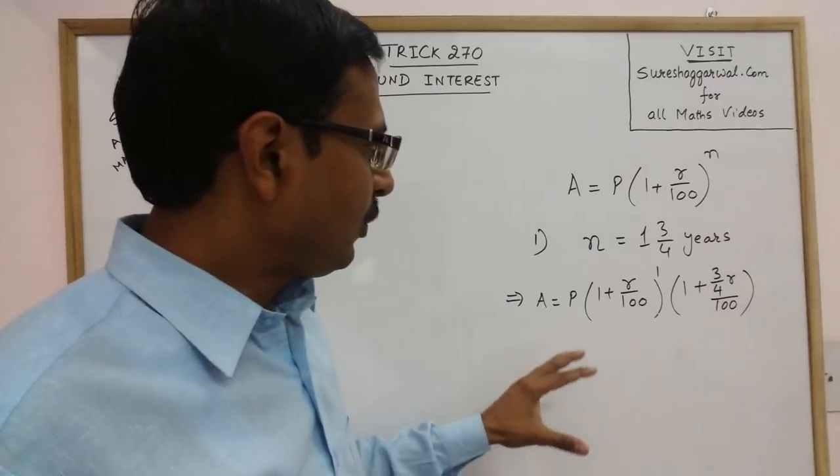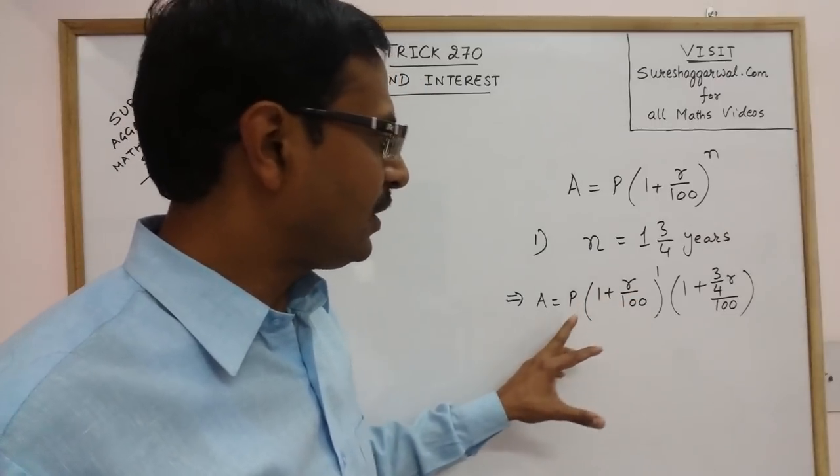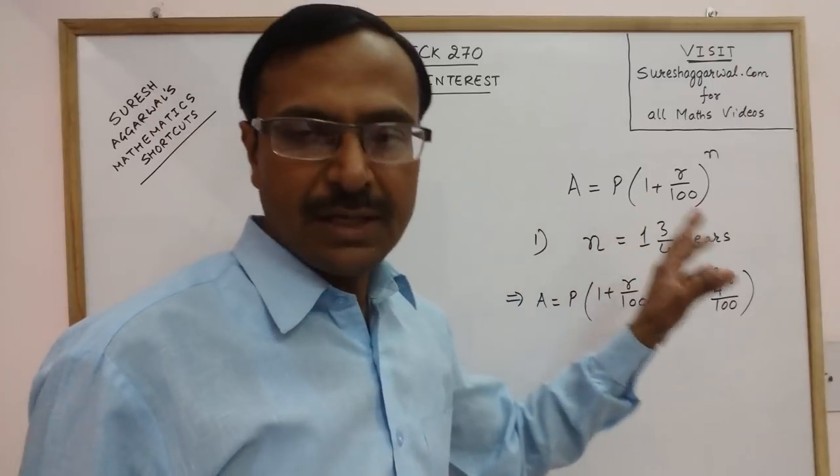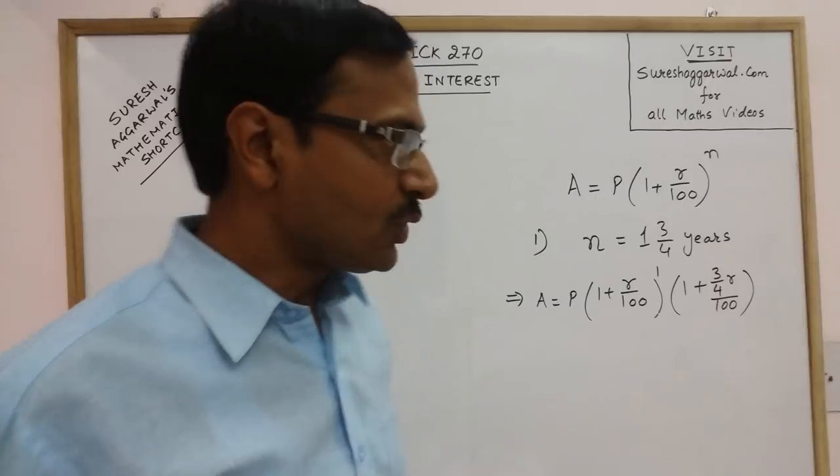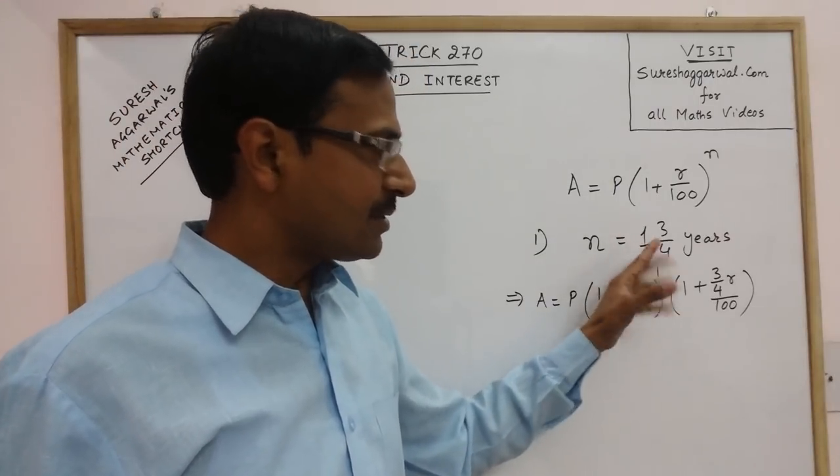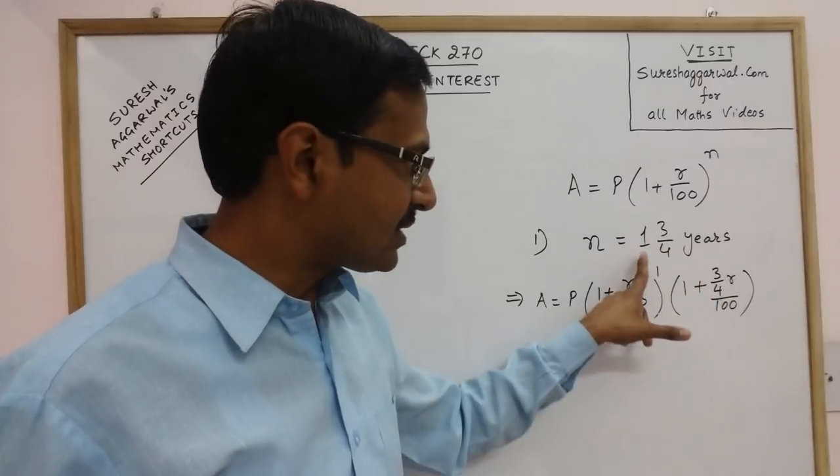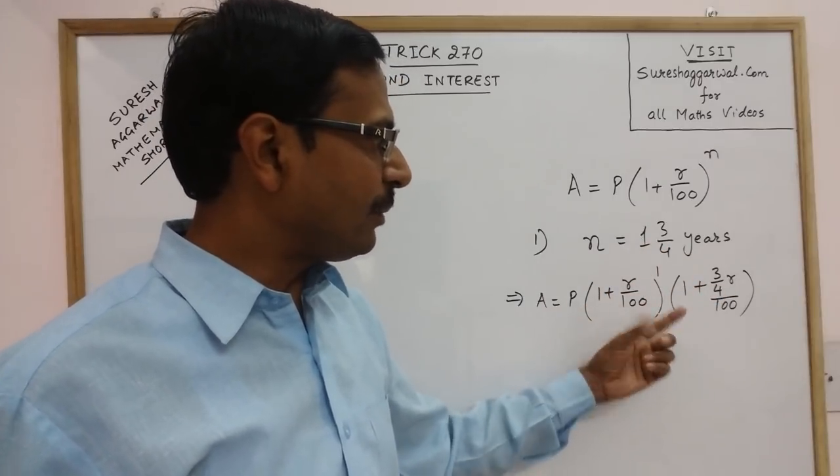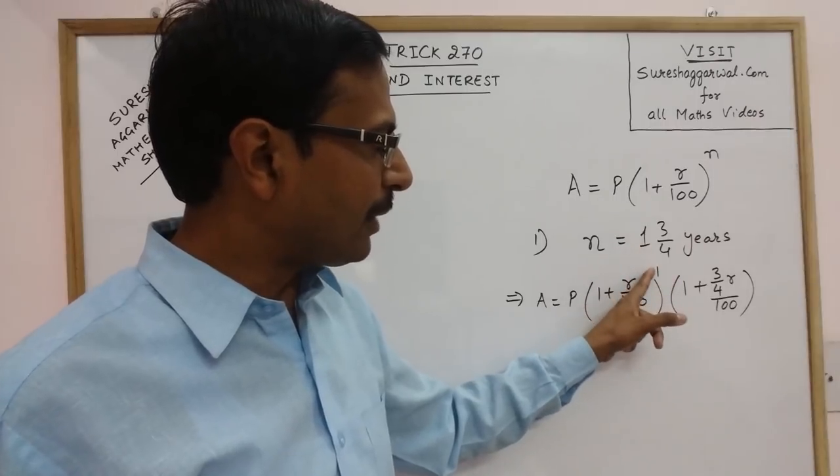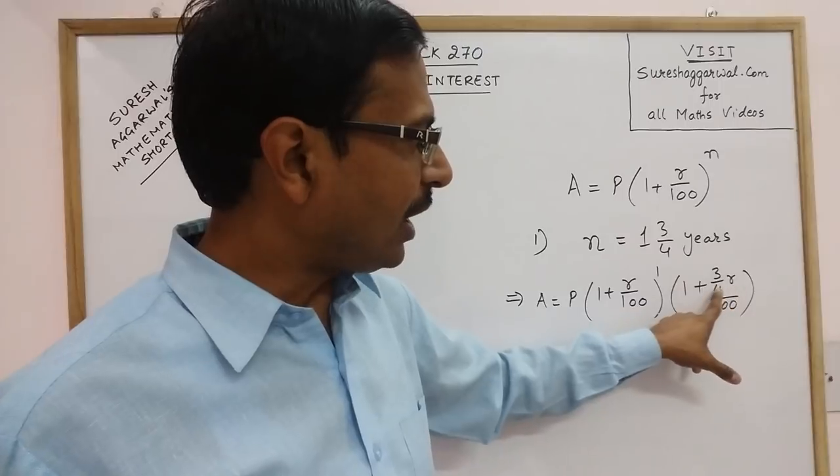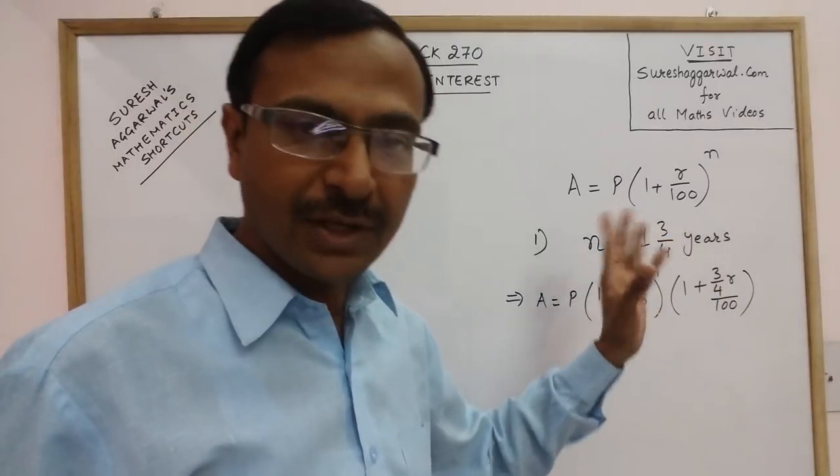Now see, if you put the value of R and P here, you will get the amount received after 1 3/4 years. So the trick is to separate the whole number of years, the exact number of years, whatever is there in the given question. The first term will be raised to that power, the whole number power and the second term will have the coefficient of R as the fractional part of the number of years.